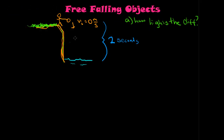Alright, welcome back. In this video we'll continue to solve some more free-falling objects problems. We're going to continue to do it graphically since I think that's important. Memorizing the equations is pretty useless since you can derive the equations straight from the graphical interpretation. So as long as you understand the graphical interpretation and know how to solve them using it, you'll be good to go.